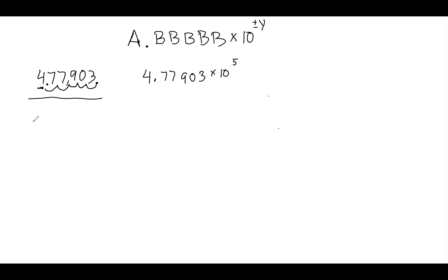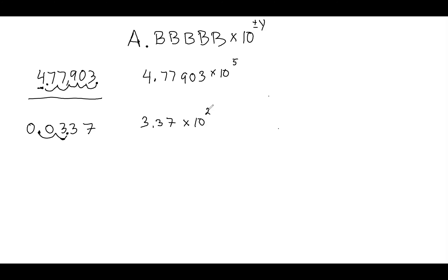Let's do another one. What if my original number is 0.0337 and I want to put this into scientific notation? I read from left to right to find the first non-zero digit — there's a zero, another zero, and then the first non-zero digit is 3. I take the decimal, which is between the zeros, and move it after that first 3. I write it as 3.37 times 10, and I moved the decimal two spaces, so my exponent is 2. But my original number was less than one, so the exponent is negative two: 3.37 × 10⁻².